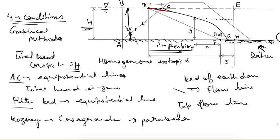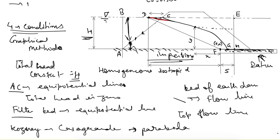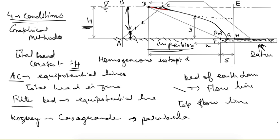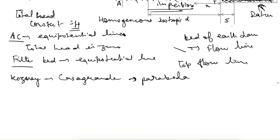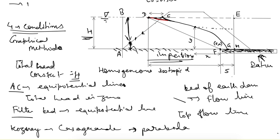From studies done by Kozni and its application by Casagrande, it was proposed that the top flow line has the shape of a parabola. The actual parabola should end at point D, but a modification is needed because the flow must start at point C — the contact between water and the top surface. There is a reverse curve in that small part; apart from that, it is a simple parabola. This applies when a filter bed is present on the downstream side.